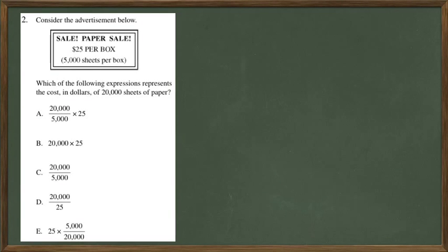Consider the advertisement below. Sale, paper sale, $25 per box, 5,000 sheets per box. Which of the following expressions represents the cost in dollars of 20,000 sheets of paper?